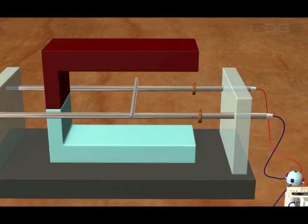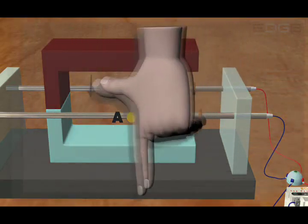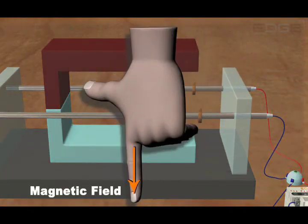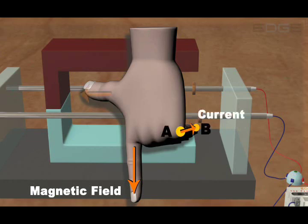The current flows through the conductor from point A to point B. The magnetic field is in the downward direction. So if we align the forefinger in the downward direction and the middle finger in the direction from A to B, then the thumb points towards the left.